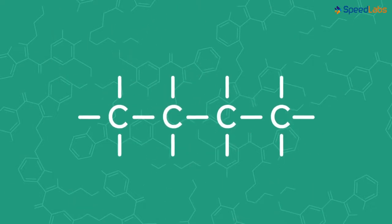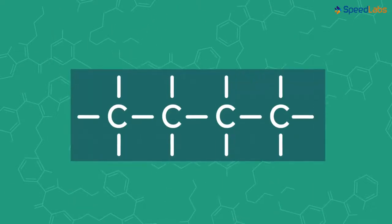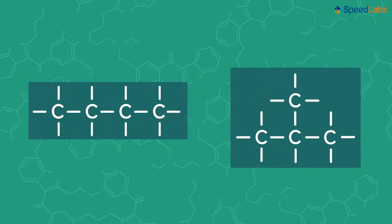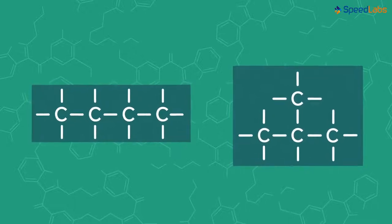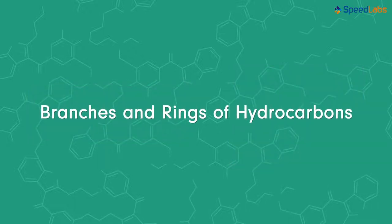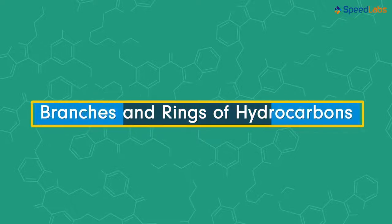We concluded in the previous video by seeing two possible options for a hydrocarbon with four carbon atoms. It could be this chain or maybe this one. In this video, we will cover the concept of branches and rings of hydrocarbons. Let's discuss them in detail.